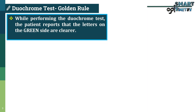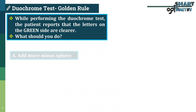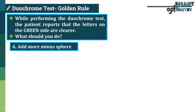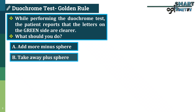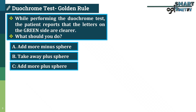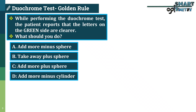While performing the duochrome test, the patient reports that the letters on the green side are clearer. What should you do? Option A: add more minus sphere. Option B: take away plus sphere. Option C: add more plus sphere. Option D: add more minus cylinder.